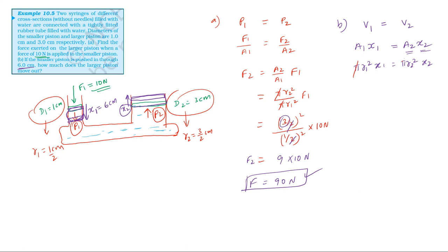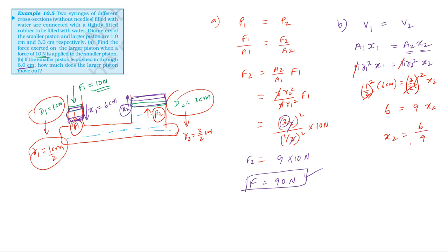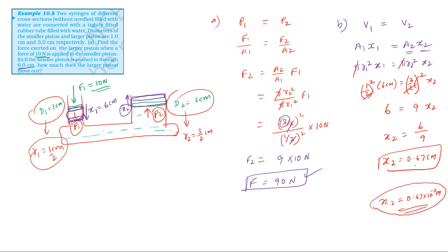Pi cancels. With R1 = 0.5 cm and R2 = 1.5 cm, and x1 = 6 cm, we get x2 equals six divided by nine, which is 0.67 centimeters, or approximately 0.67 times 10 to the power minus 2 meters.